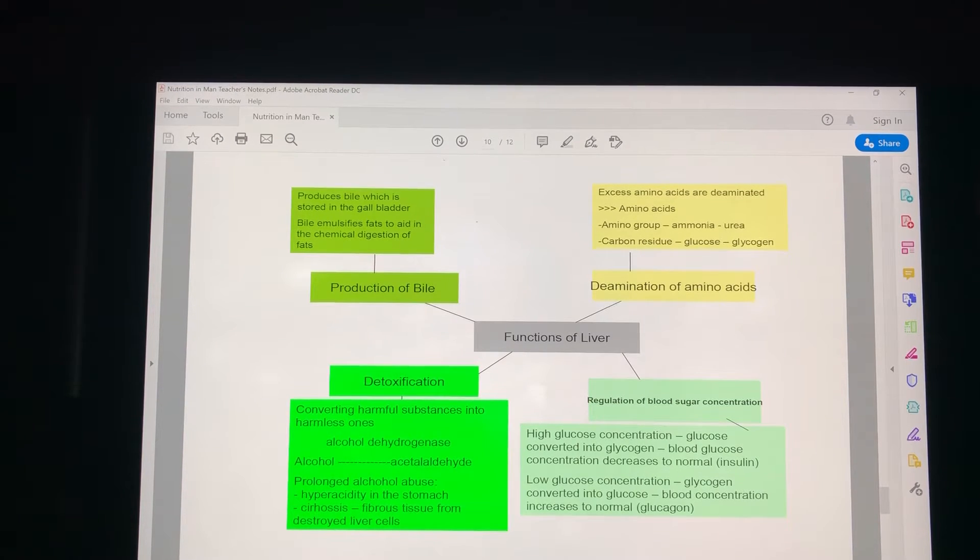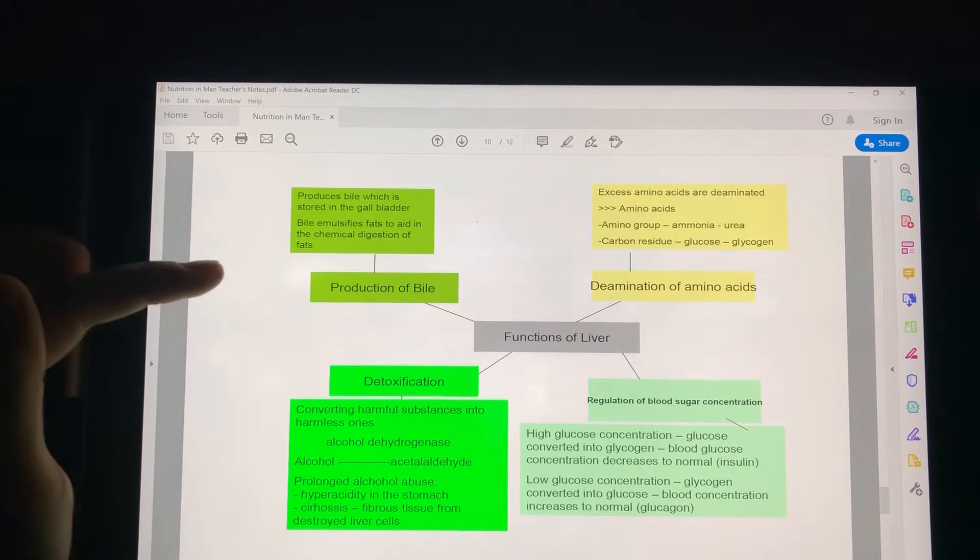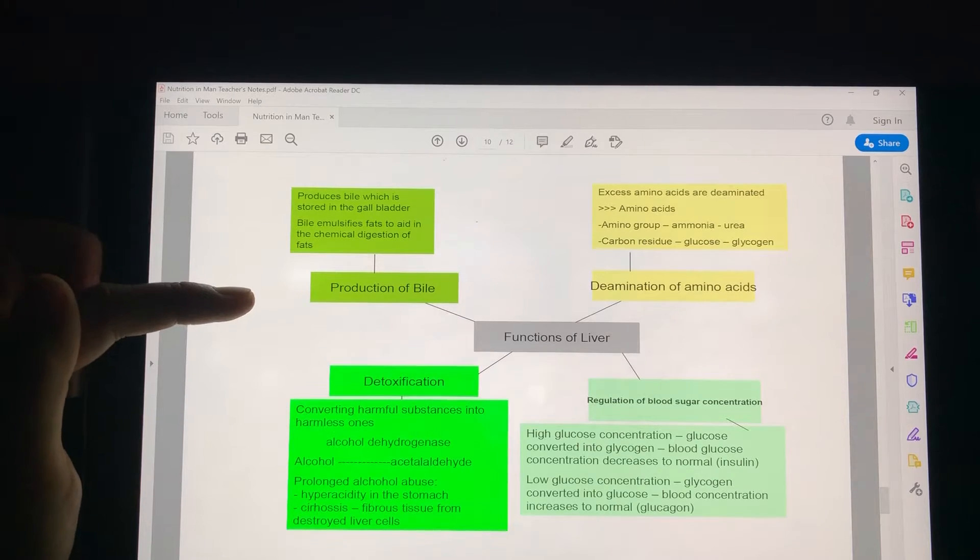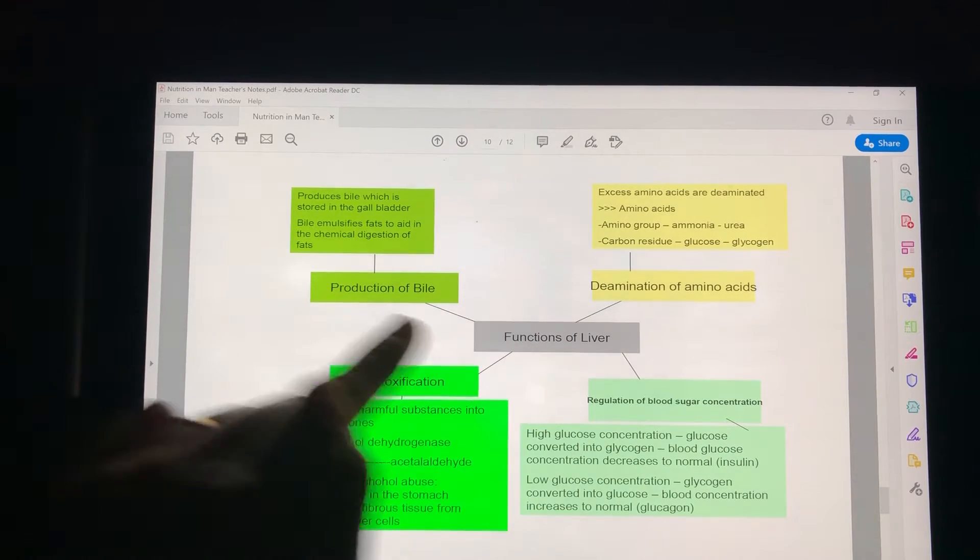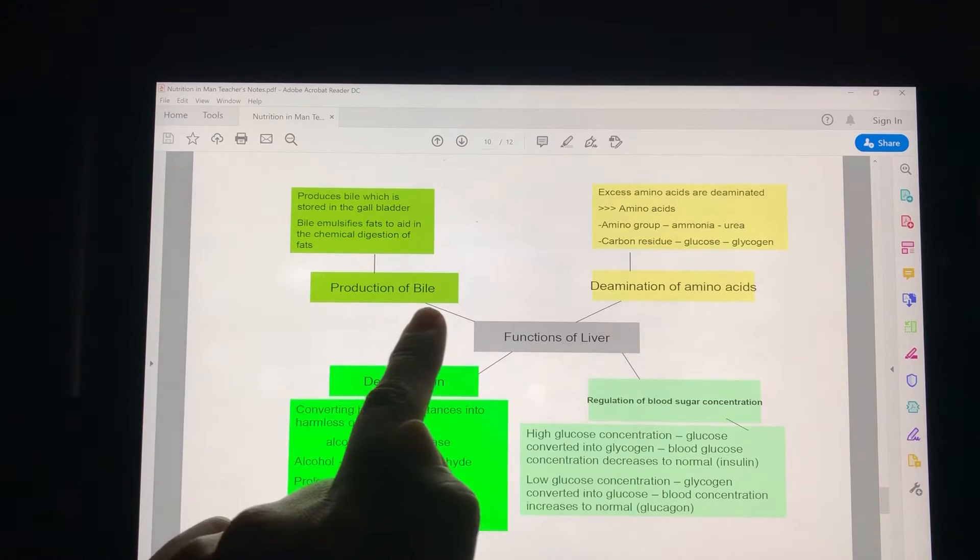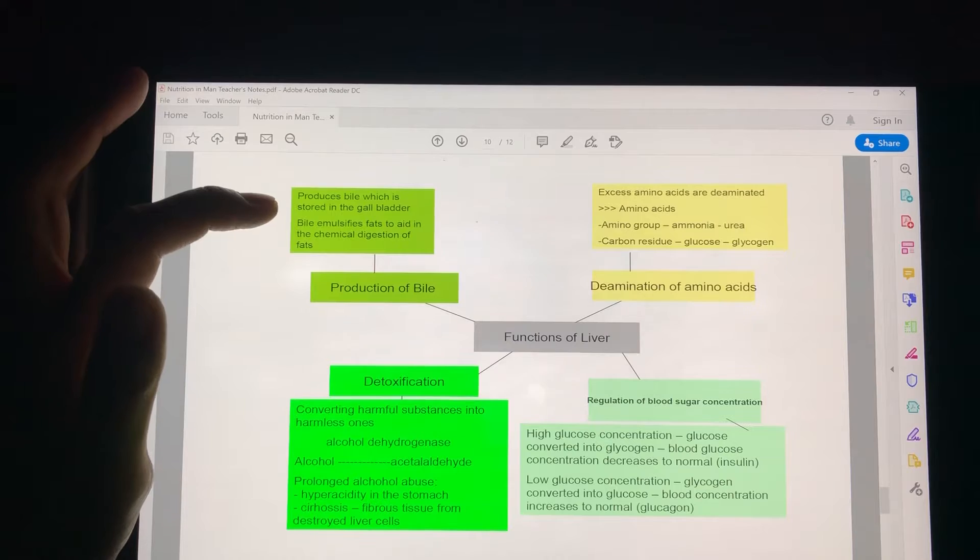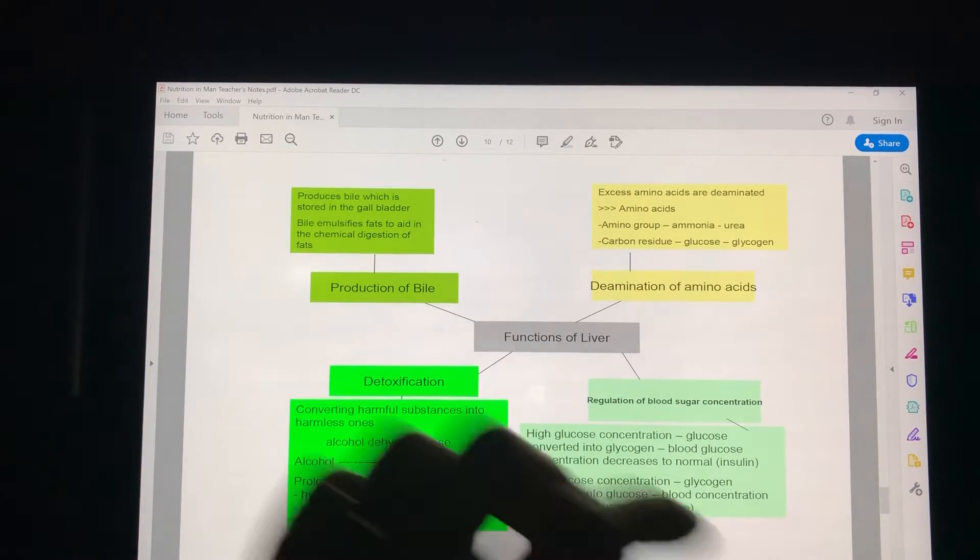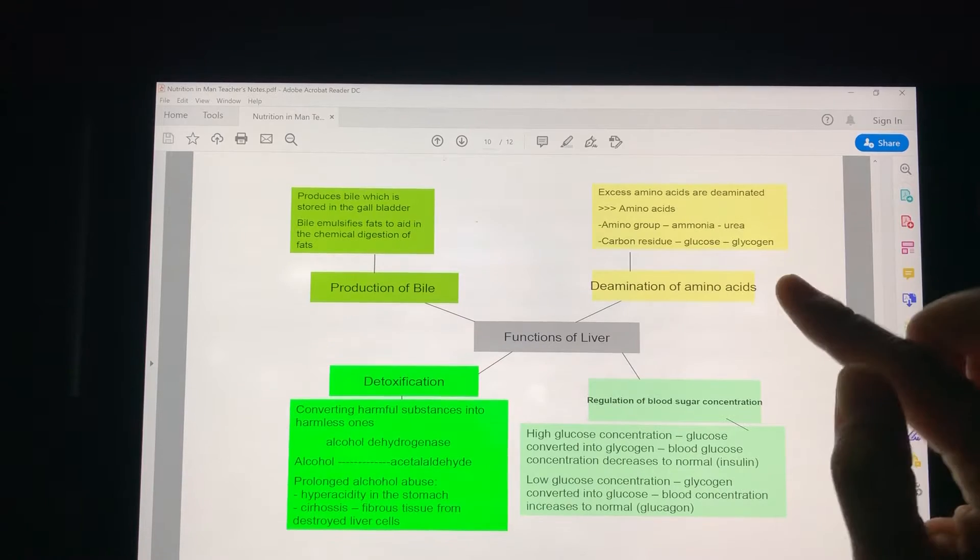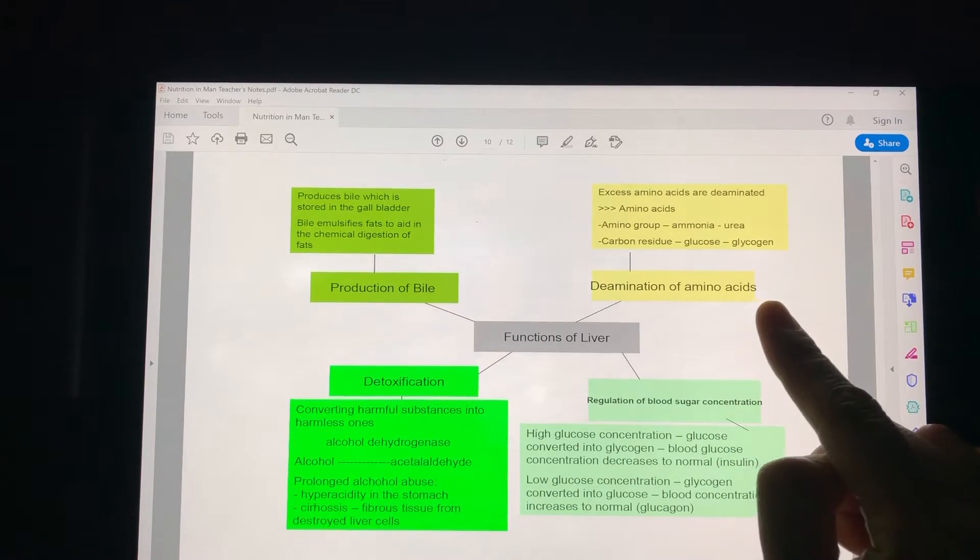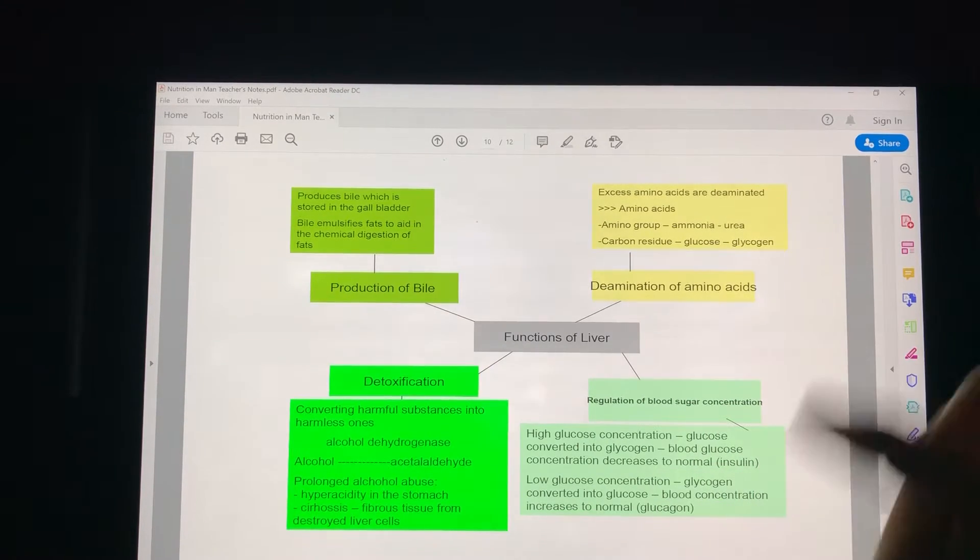The function of the liver. We've already looked at two functions of the liver. One is the production of bile, and this bile that it produces is then stored in the gallbladder. So that is one function of the liver. The other function that we just finished is the de-amination of amino acids. The excess amino acids are de-aminated.